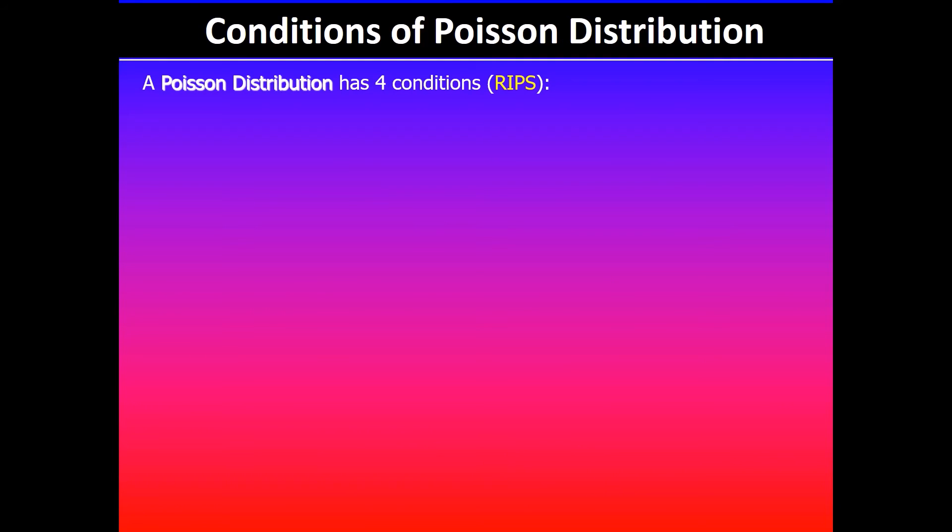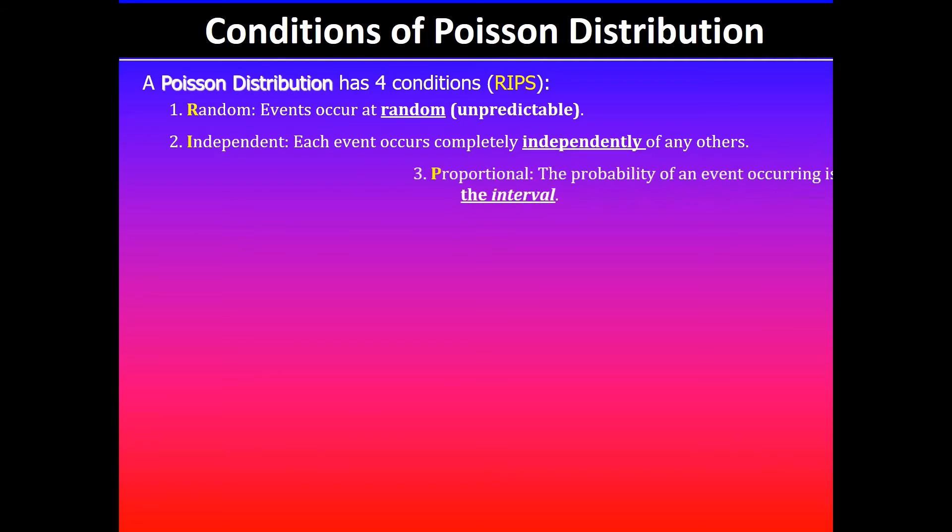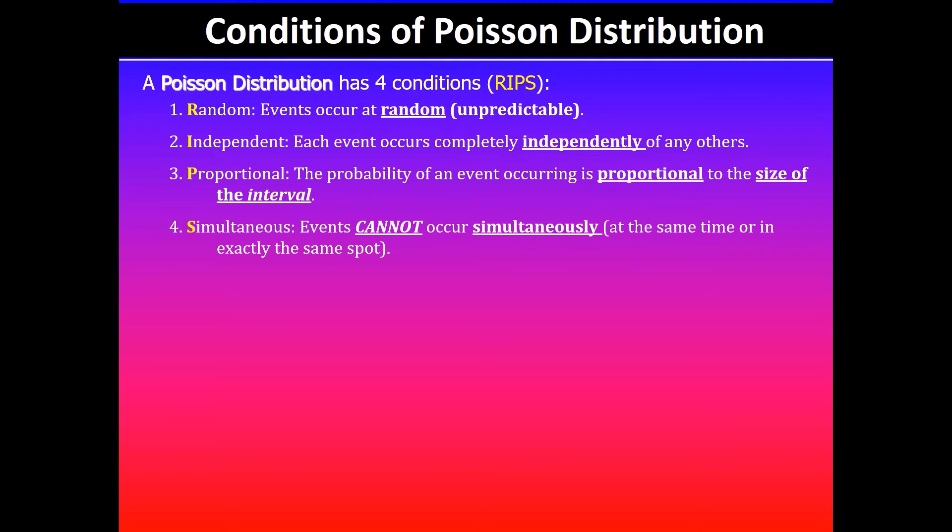Moving on, we'll look at the four conditions of Poisson distribution. First one is random, so events occur at random and these are unpredictable. Second, each event is completely independent. Third, the probability of event occurring is proportional to the size of the interval. And fourth, the events cannot occur simultaneously, meaning they cannot occur at the same time or in exactly the same spot.